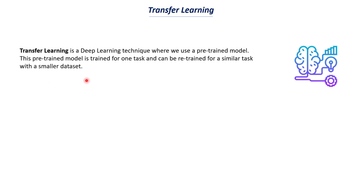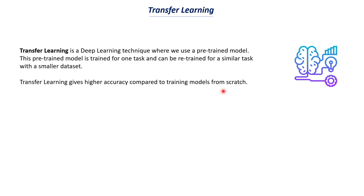The key advantage is that you can use a smaller dataset. When you train a model from scratch with a smaller dataset, you cannot achieve good accuracies. Transfer learning gives you higher accuracies compared to training from scratch in most cases. It should be used for a similar task — you cannot take an NLP model and use it for image recognition.